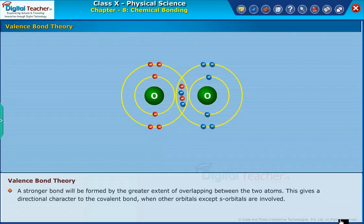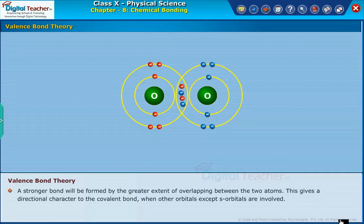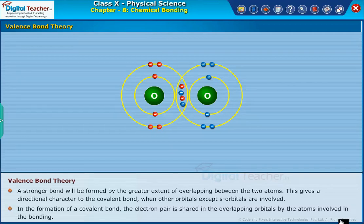This gives a directional character to the covalent bond when other orbitals except S orbitals are involved in the formation of a covalent bond.